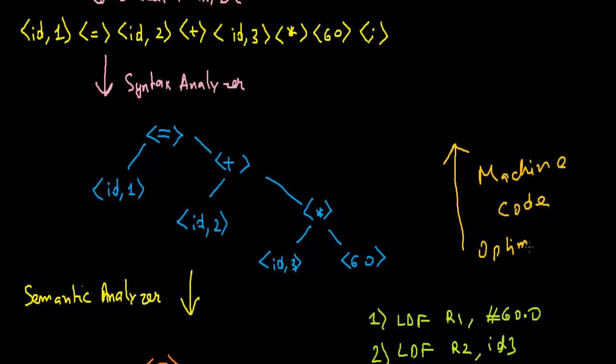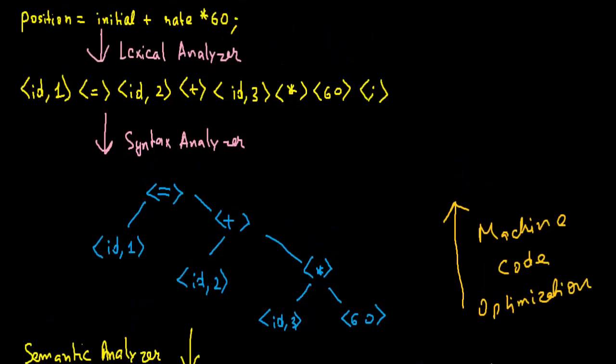This will generate the final code. So LDF step 1, LDF R1 and ID 3 in register. Now we will directly multiply the constant value. Now we will go to LDF, we will again load the register ID 2.